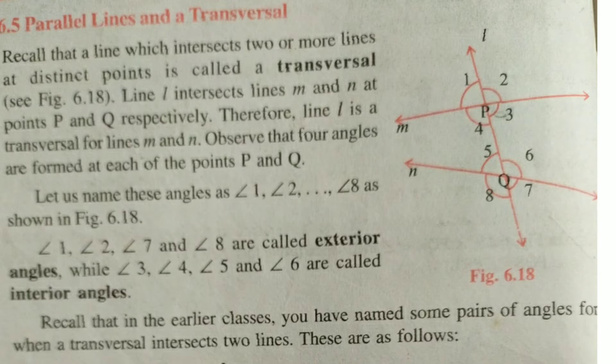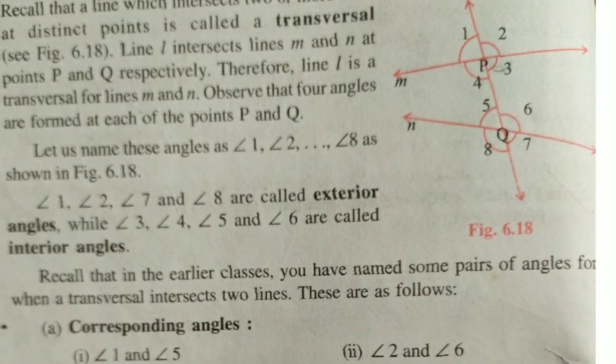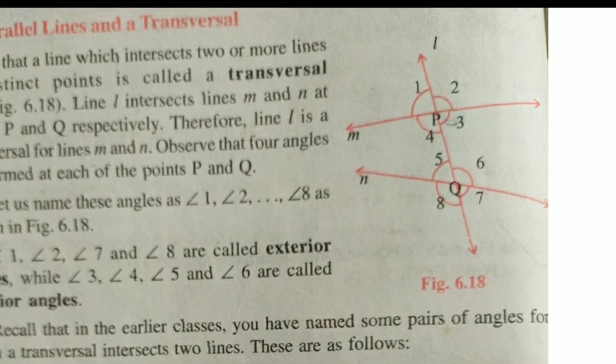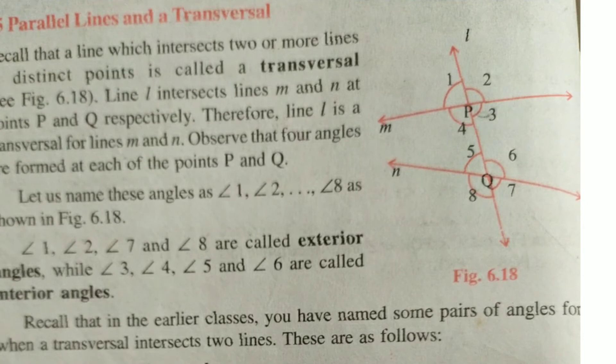You have got knowledge about corresponding angles and alternate angles in earlier classes. But today I am going to inform you about exterior angles, interior angles, corresponding angles, and alternate angles. Angles 1, 2, 7, and 8 are called exterior angles, as you can see in the figure. Angles 3, 4, 5, and 6 are called interior angles.